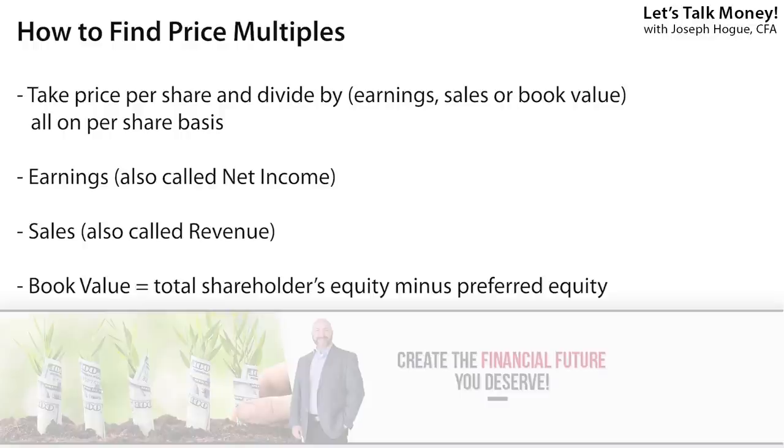Finding any of these is really easy. These are always on a per-share basis, so the price of each share divided by the earnings per share or the sales per share. Earnings are usually given on a per-share basis but to find these other two, you'll probably have to divide them by the number of shares outstanding. You can either look for the number of shares on the statistics tab for the company on Yahoo Finance, or just take the market value of the company divided by the price per share and that's going to give you the shares outstanding.